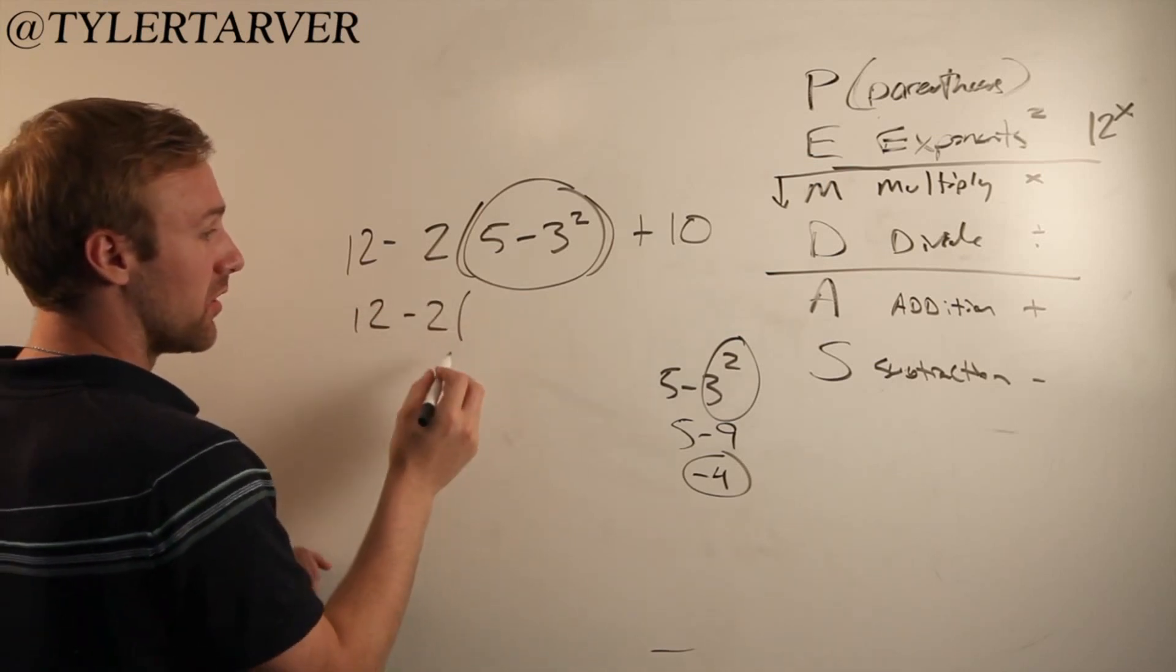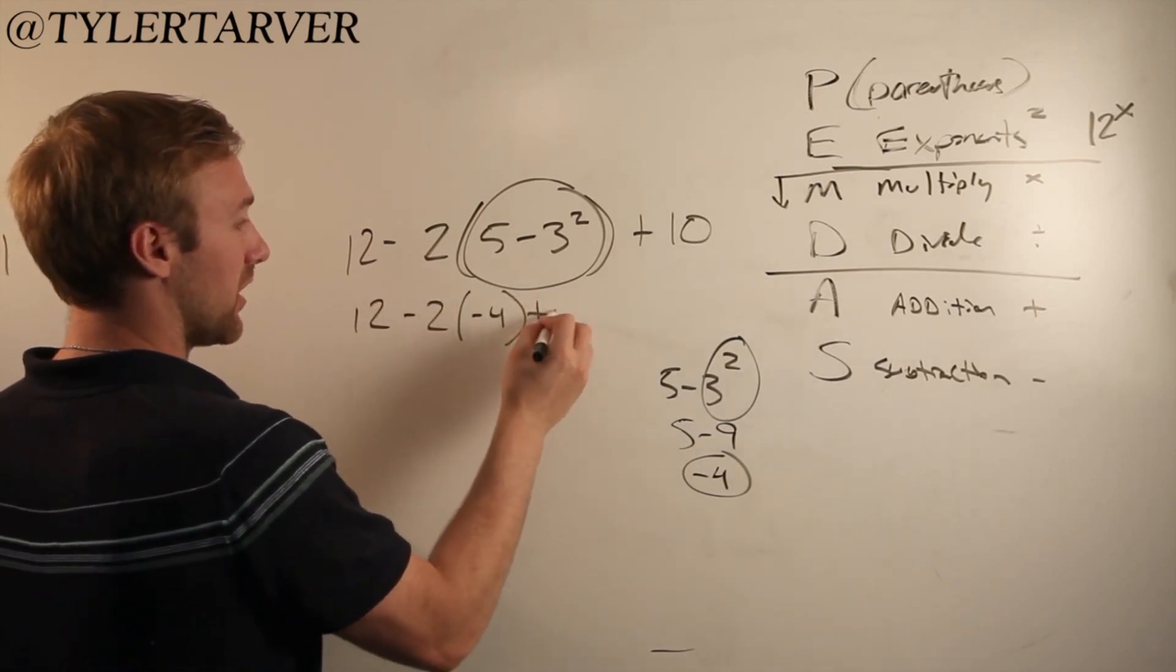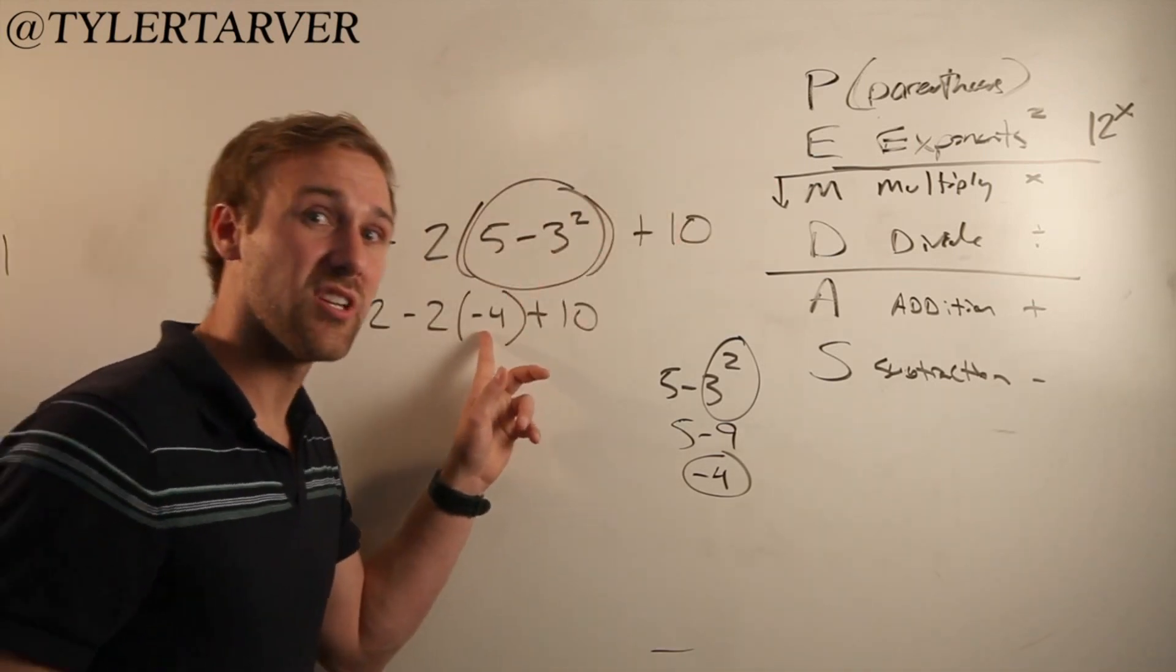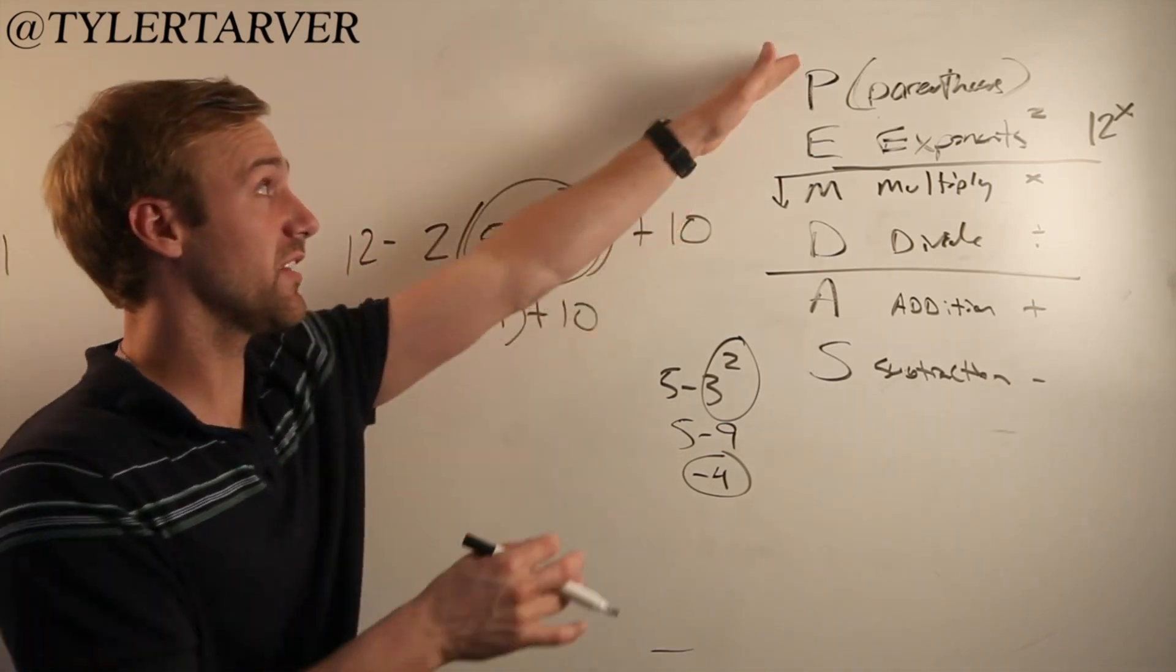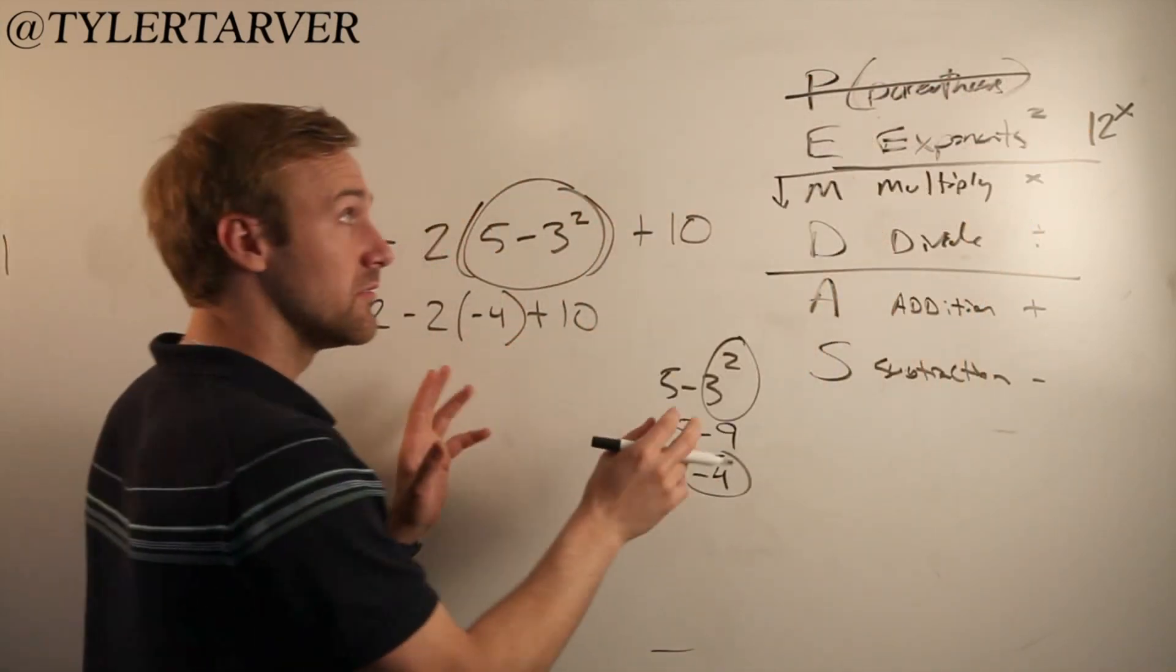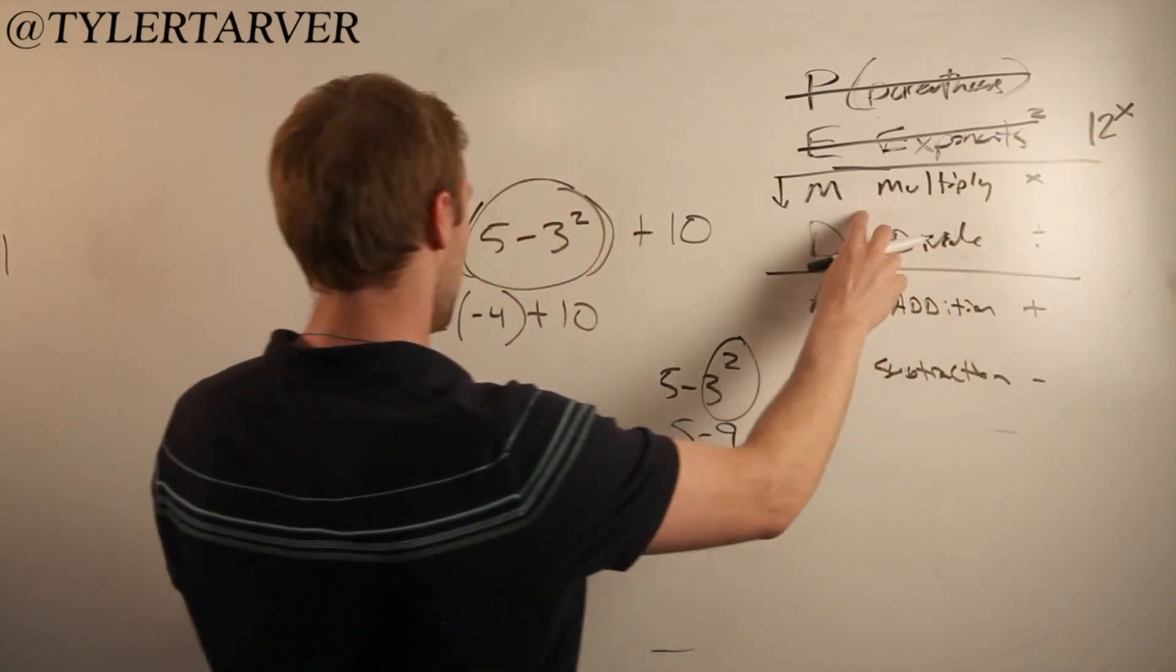So 12 minus 2, negative 4 plus 10. I have parentheses here, but there's nothing to simplify in there. So therefore, it's no longer needed. Exponents. Do you have any exponents left? No. Multiply.